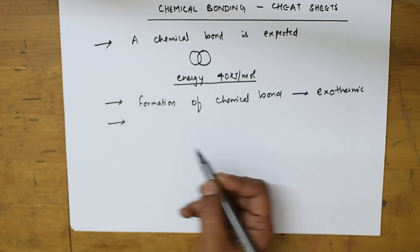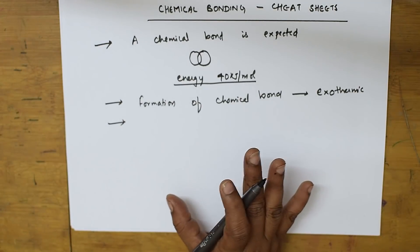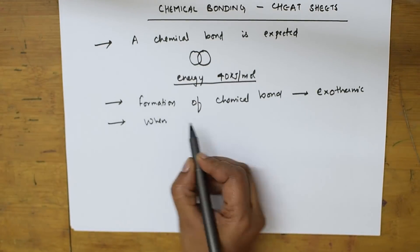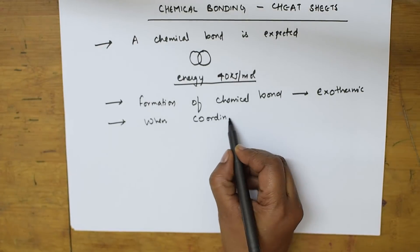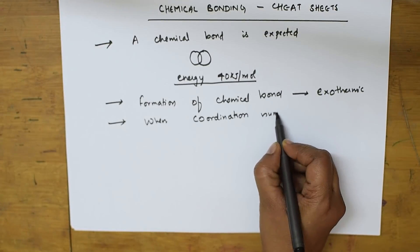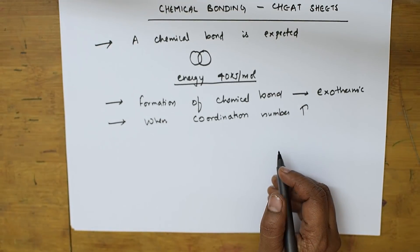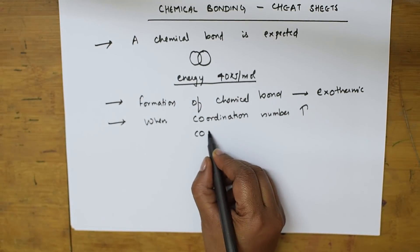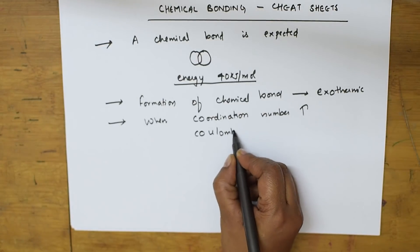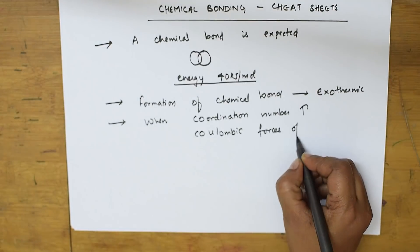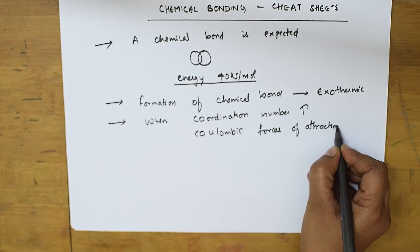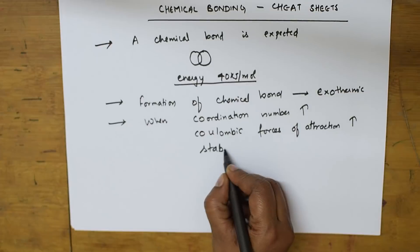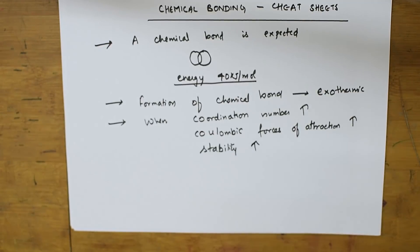One more important concept: when coordination number increases, the coulombic forces of attraction increase. When coulombic forces of attraction increase, stability also increases. Remember this concept.